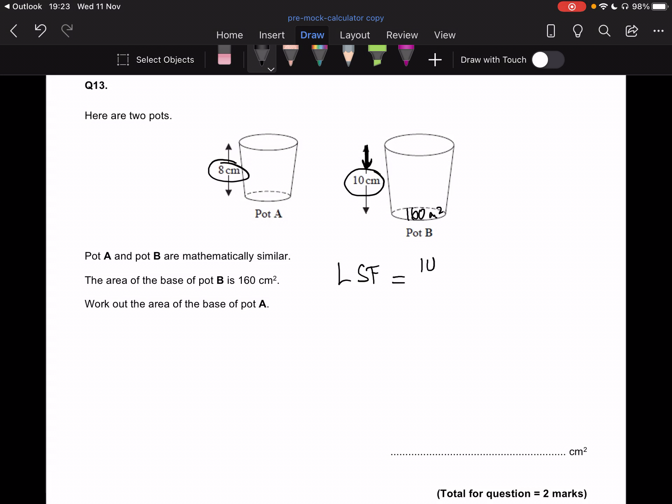So I'm going to do what's the side, what's the height of the big pot divided by the height of the small pot. So it's 10 over 8. I'm not taking any chances. I'm rotating my calculator. So that's 5 over 4, also known as 1.25. So this is the linear scale factor.